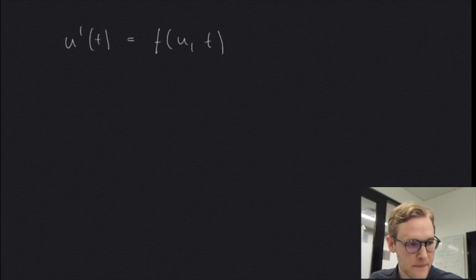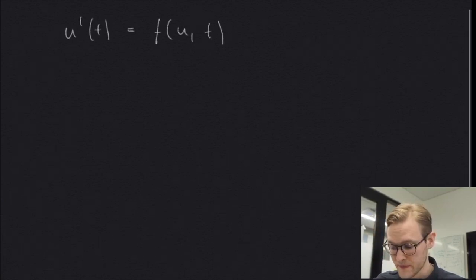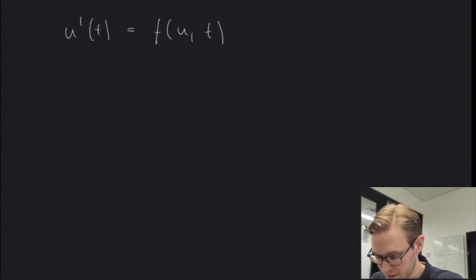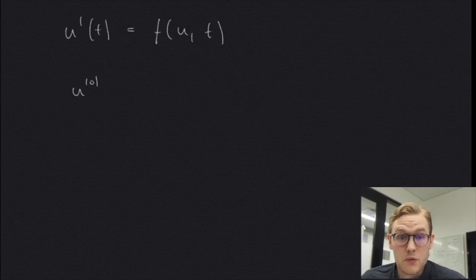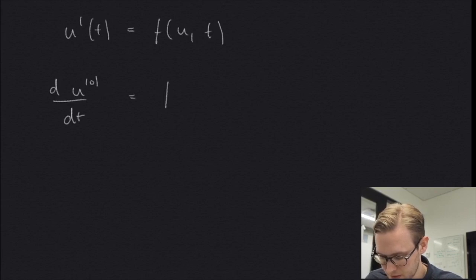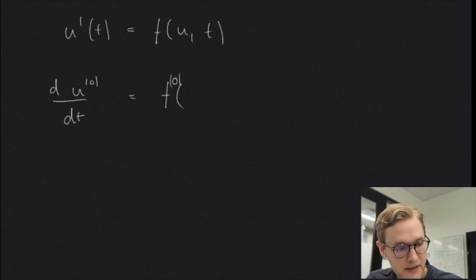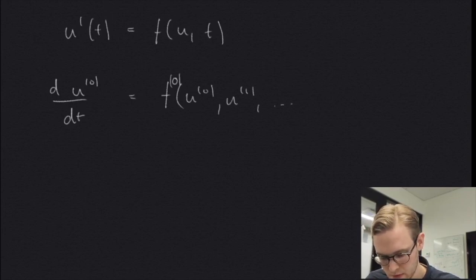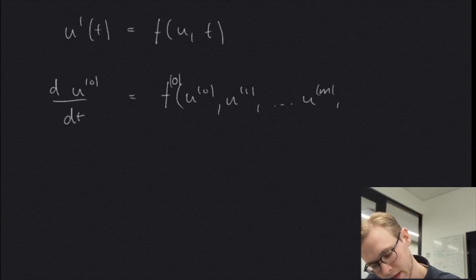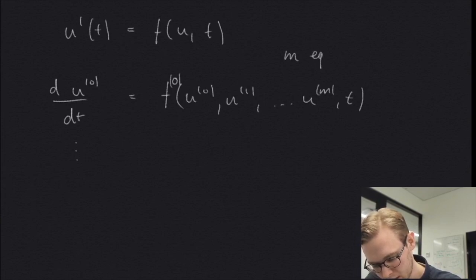So far we have looked at equations of the form: derivative of u equals some function dependent on u and t. But now we want to solve a system where we have the derivative of u_0, d/dt, equal to some function which may be dependent on all of our equations — all the solutions u_0 all the way up to u_m — and of course on t. So we have m equations now.